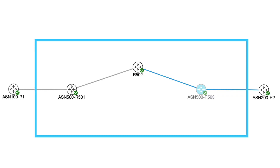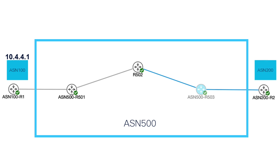This behavior will be illustrated with the following lab. There are three ASNs. ASN 100 represents an external customer advertising the network 10.4.4.1. ASN 500 represents an internal network where you interconnect with external customers. ASN 200 represents another external customer.